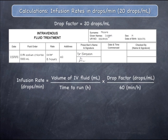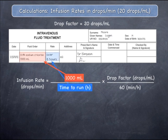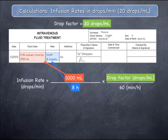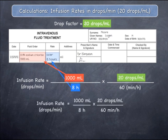Let's now replace each of these quantities with our actual values by reading the IV fluid order. The volume of IV fluid to infuse can be read directly from the IV fluid order. In this case, it is 1,000 mils. The time over which the infusion should run is also written on the IV fluid order in the field called rate. In this case, it is 8 hours. The drop factor is printed on the packaging the infusion line comes in. In this case, it is 20 drops per mil.